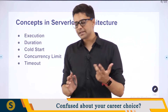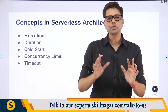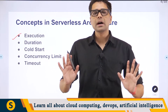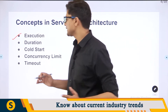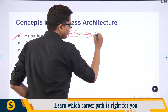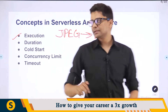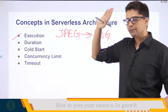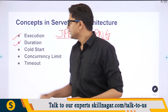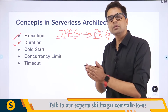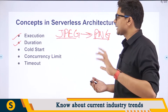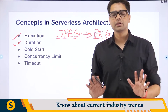When implementing serverless, there are core concepts you need to understand. First is execution — you are executing whatever is written inside a function. For example, if someone uploads a JPEG photo, the function converts it to PNG. Second is duration — the time in which the function executes and returns a result, whether true or false. This is the duration by which the function has successfully run.